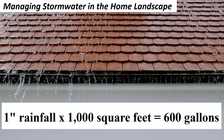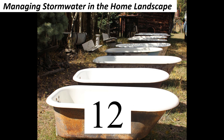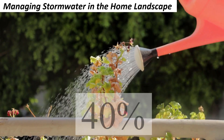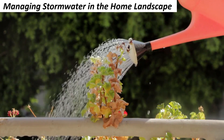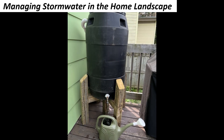A one-inch rainfall on a 1,000 square foot roof can yield as much as 600 gallons of water — that's like 12 bathtubs worth of water that you could save for reuse on those dry summer days. It is said that 40% of a home's water usage in the summer is outside watering lawns and flower gardens, so imagine having extra water to use instead of drawing from your well or faucet.